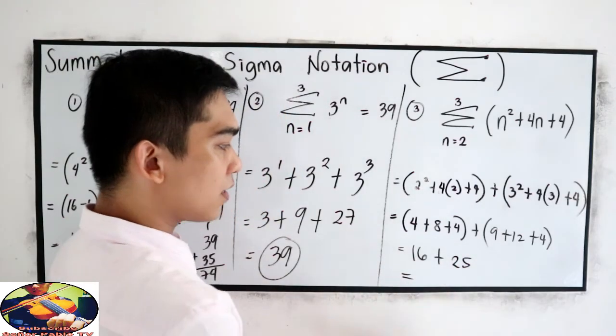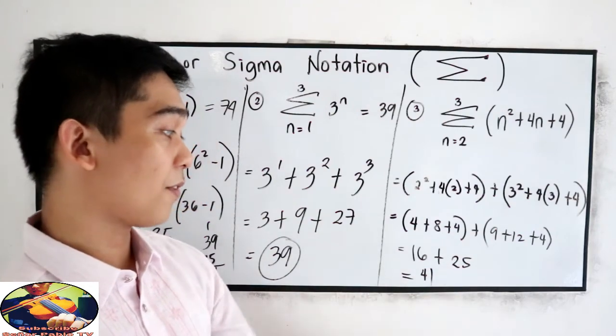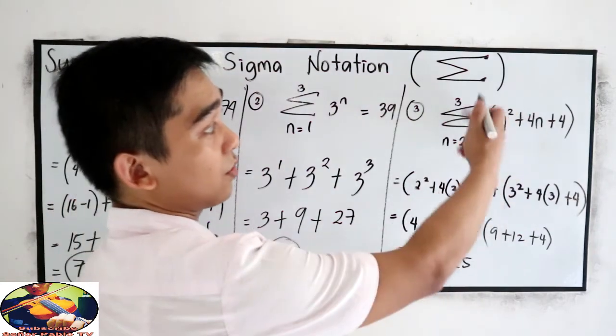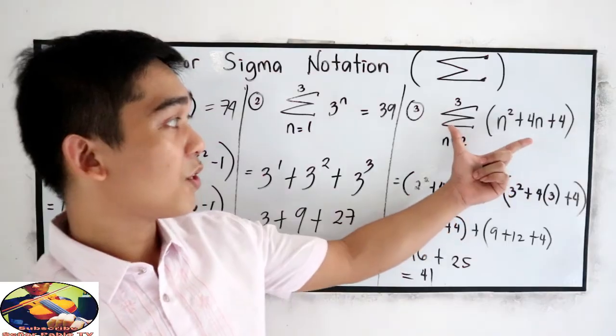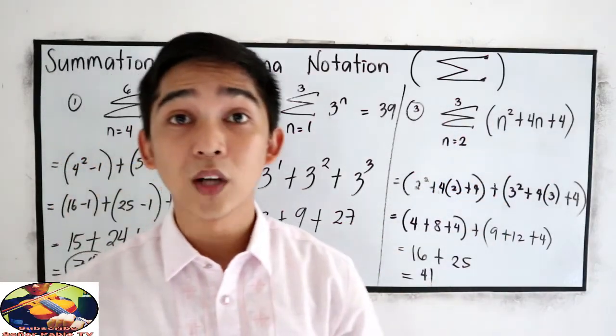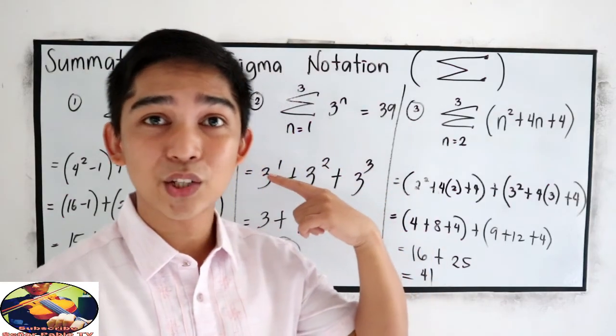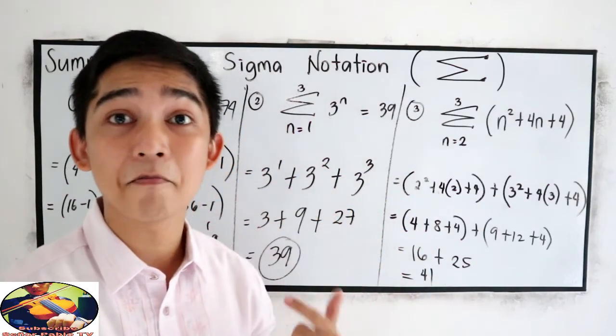So let us add, this is 41. 16 plus 25 is 41. So the sigma notation for this expression is 41. So that is the summation or the sigma notation.